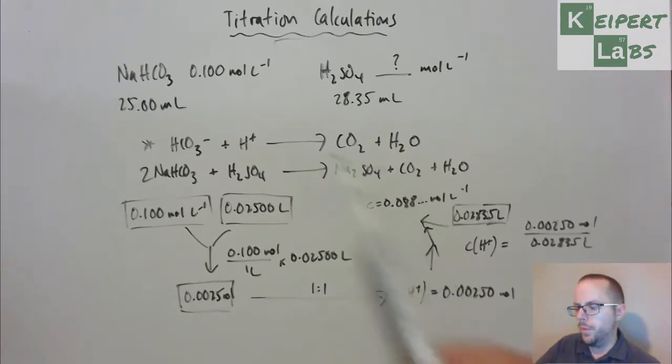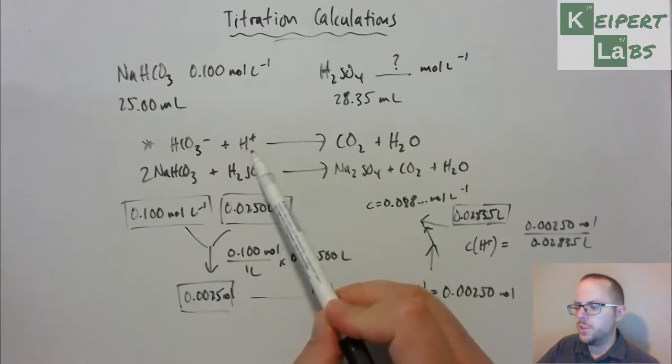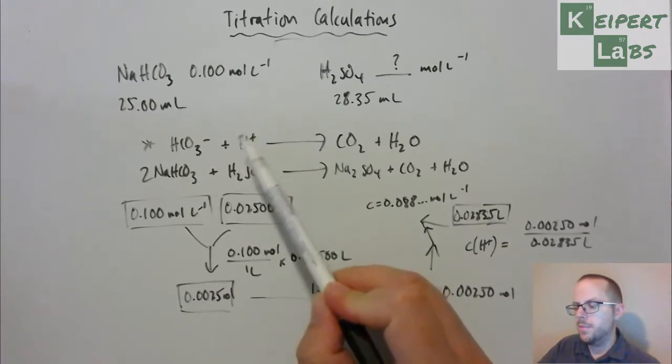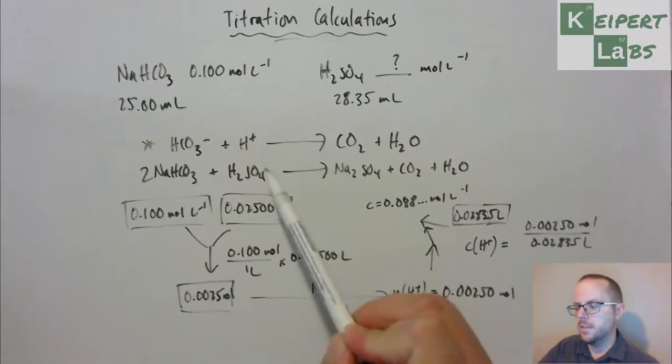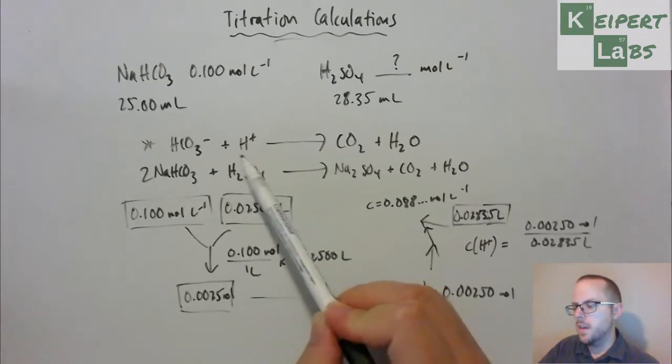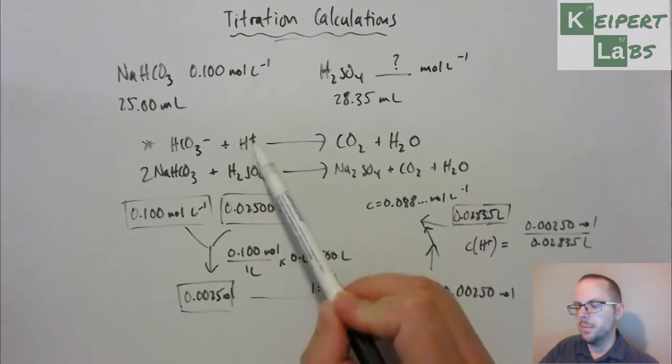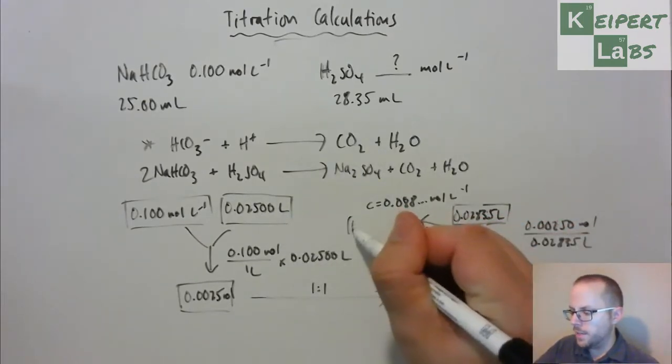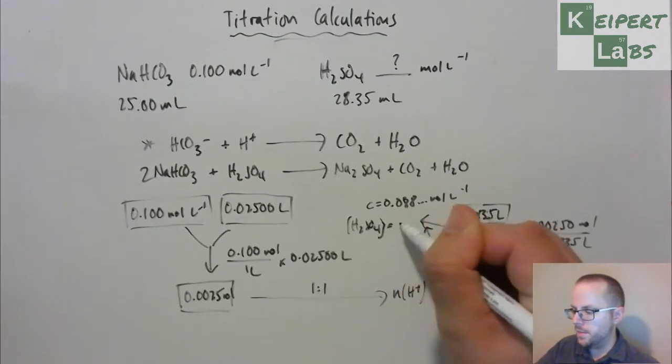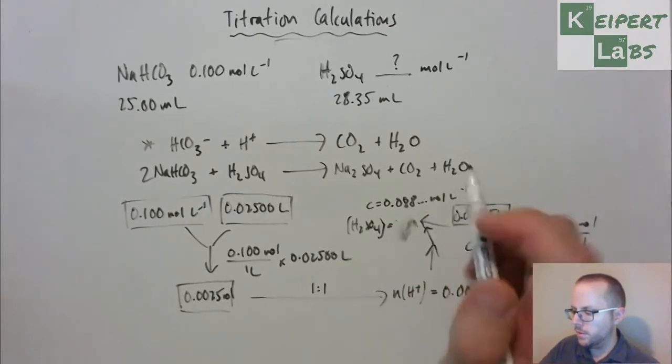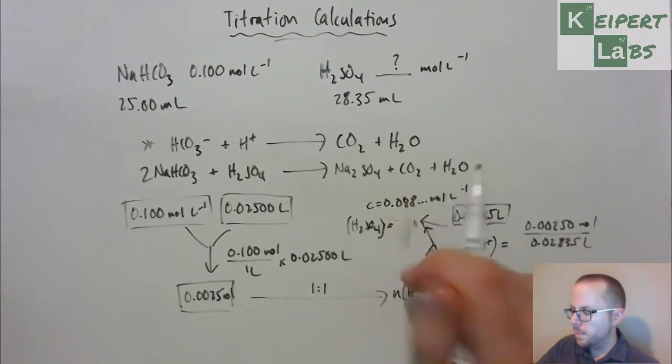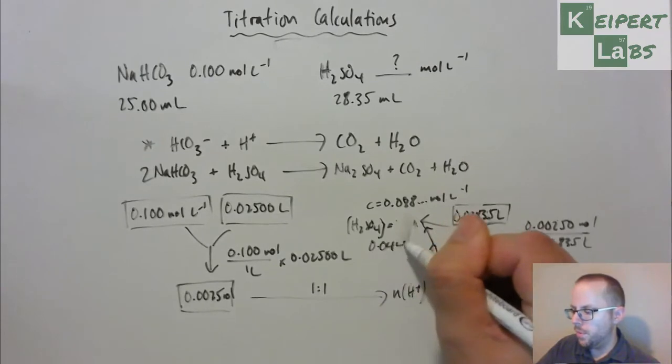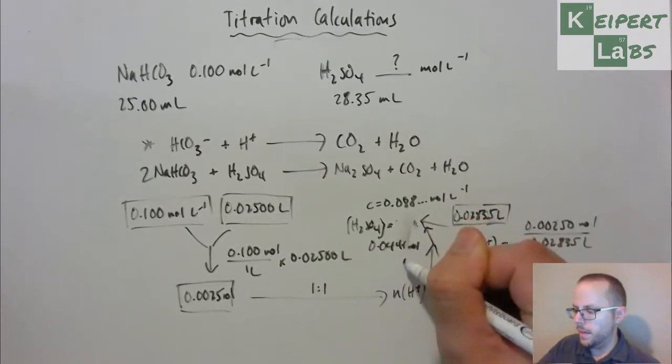So we've worked out the concentration of H+ of a value of about 0.088 moles per litre. Now, the reality is that what we recognise is that we get two moles of H+ for every one mole of sulphuric acid. So the concentration of H+ will be double the sulphuric acid concentration. So our sulphuric acid concentration is this value divided by two, so we get 0.0441 moles per litre.